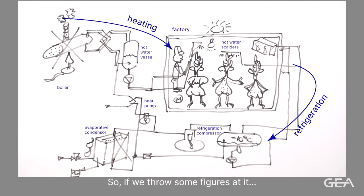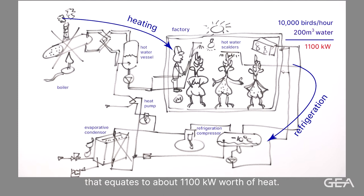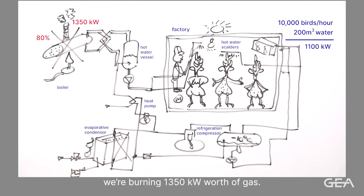So if we throw some figures at it, 10,000 birds per hour and circa 200 cubic metres for wash down at night time because the hygiene guys go wild, that equates to about 1,100 kilowatts worth of heat. If we then say that we're doing it with an 80% efficient boiler, we're burning 1,350 kilowatts worth of gas. The cost of gas is about 2 cents per kilowatt. So that costs you around about 250,000 euros a year to generate the heat.